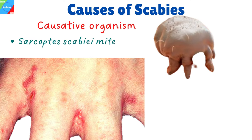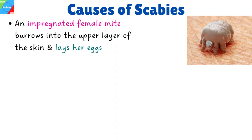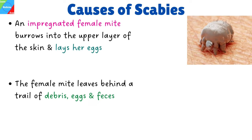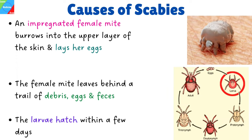Scabies is caused by the mite Sarcoptes scabiei. What usually happens is that an impregnated female mite burrows into the upper layer of the skin, called the stratum corneum, and lays her eggs along the burrow. As it burrows through the skin, it leaves behind a trail of debris, eggs, and feces. The larvae hatch within a few days.